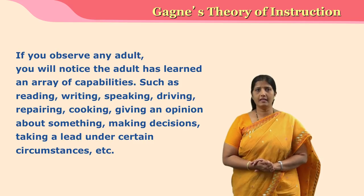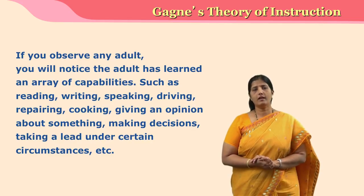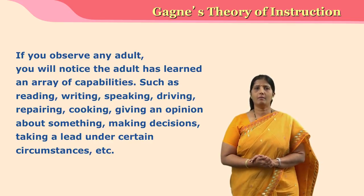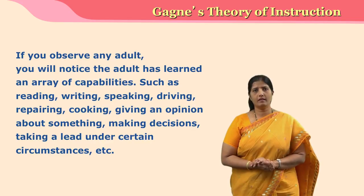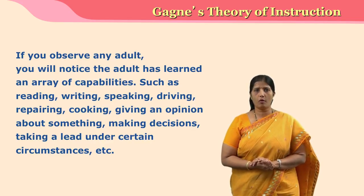If you observe any adult, you will notice that the adult has acquired certain skills like reading, writing, comprehending what the person has read, riding a bicycle, and driving. Such skills are learned by the learner. Many times they also solve complex problems. These are nothing but categories of learning, and Gagné's theory majorly throws light on these categories.